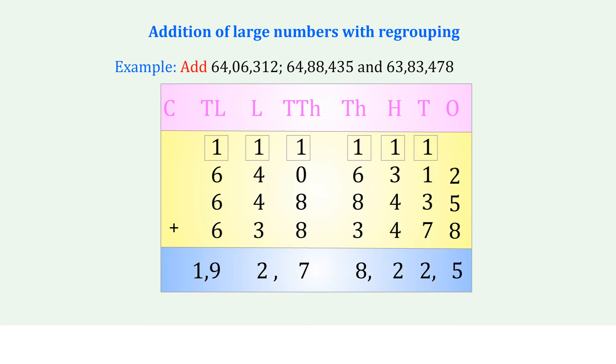Observe the table on the right side: Crores, Ten Lakhs, Lakhs, Ten Thousands, Thousands, Hundreds, Tens, Ones. The three numbers are placed in the table: 6,4,0,6,3,1,2 — then 6,4,8,8,4,3,5 — then 6,3,8,3,4,7,8.